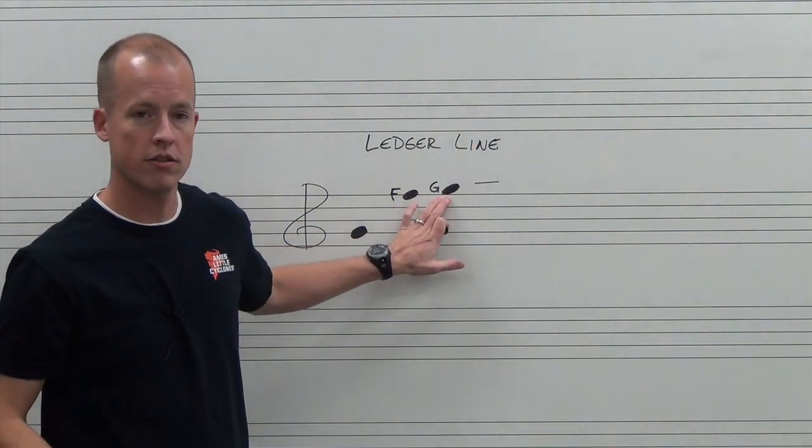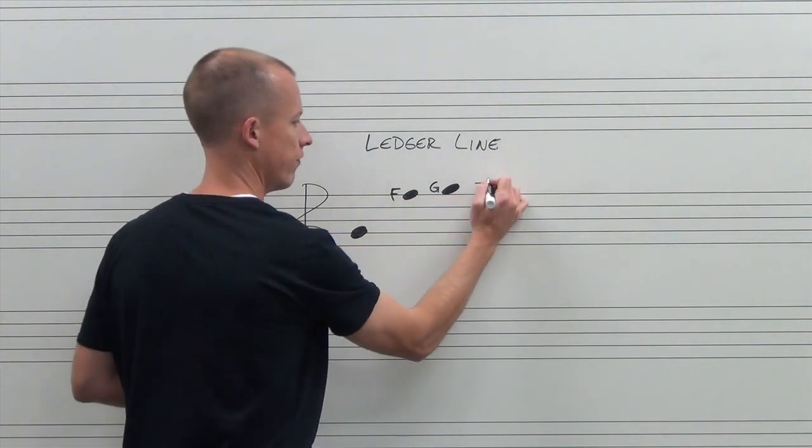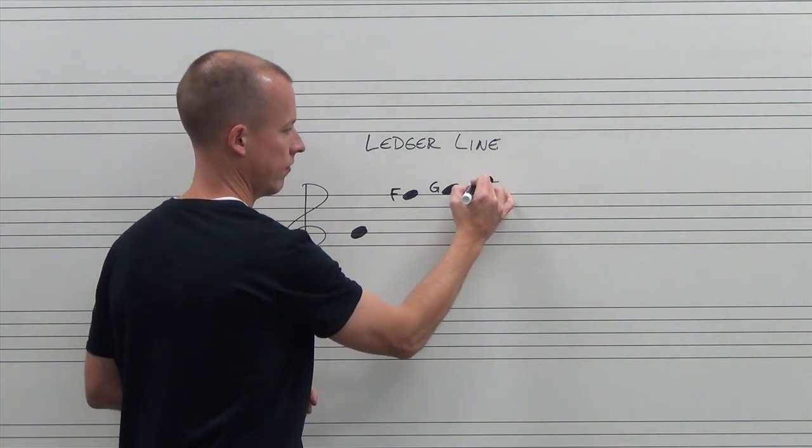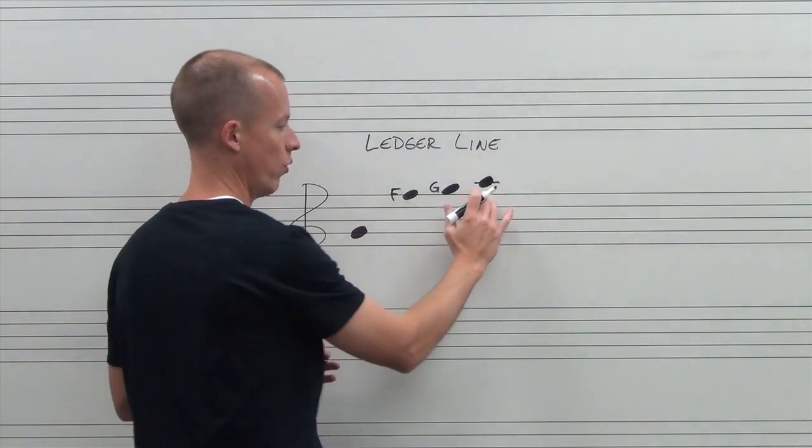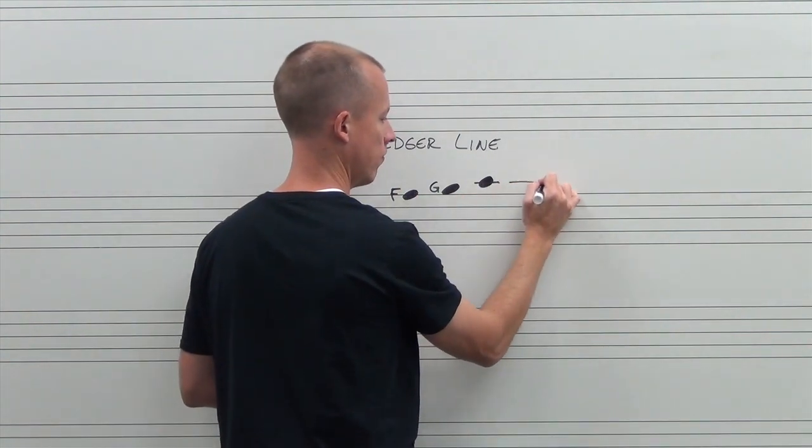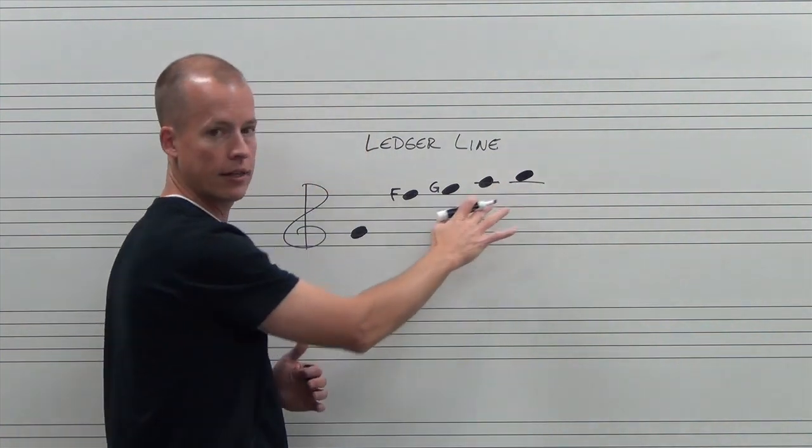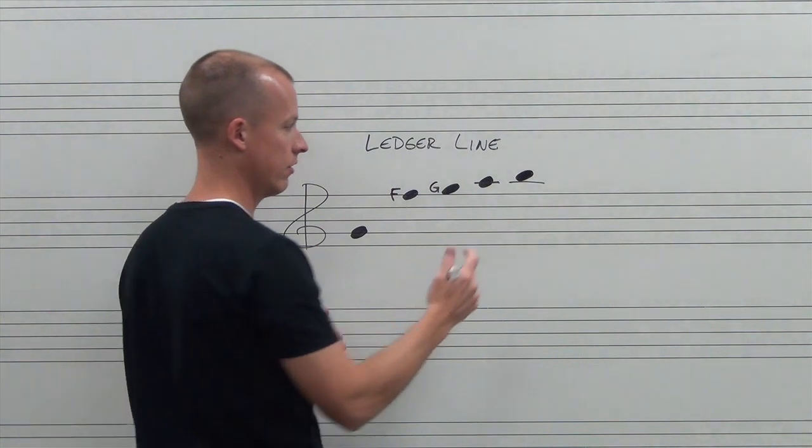So this note was on top of the fifth line. This we're going to make this note first ledger line above the staff. And then we can make one more higher note with one ledger line. And we can go above the first ledger line. To go higher than that, we would need to add an additional ledger line.